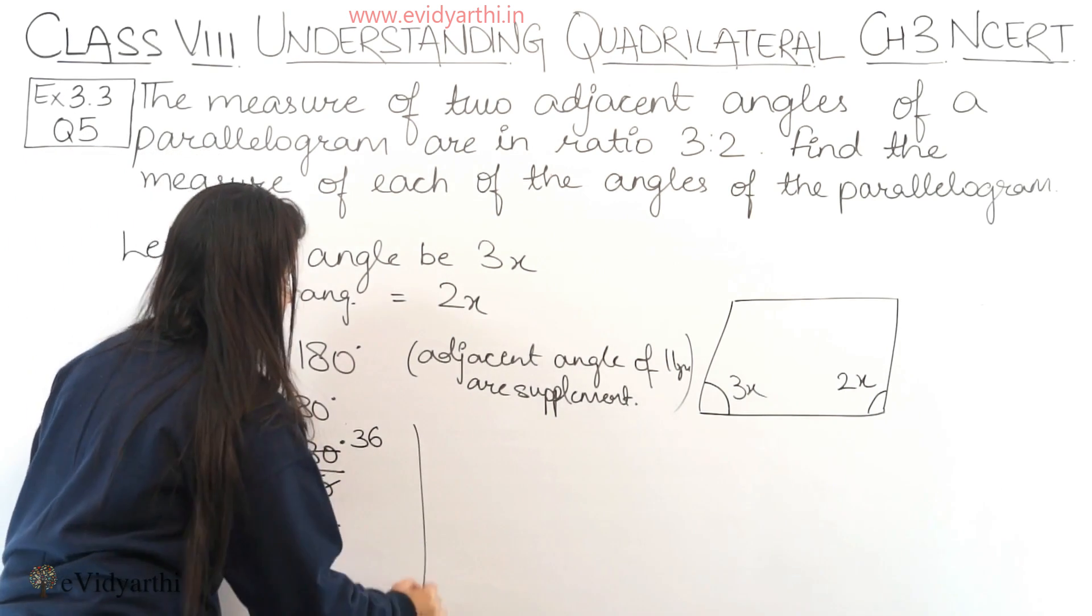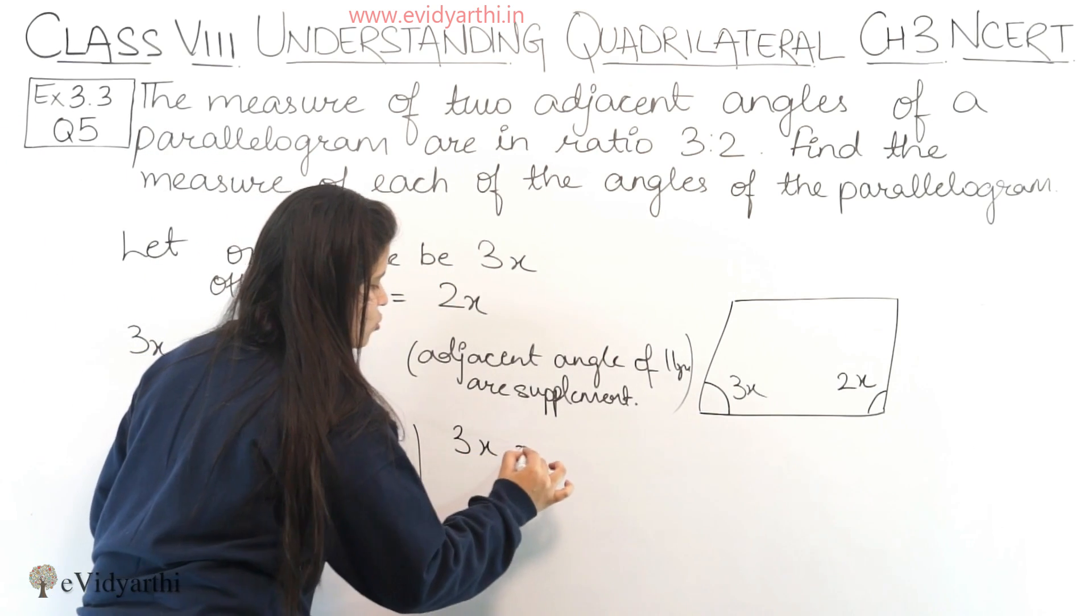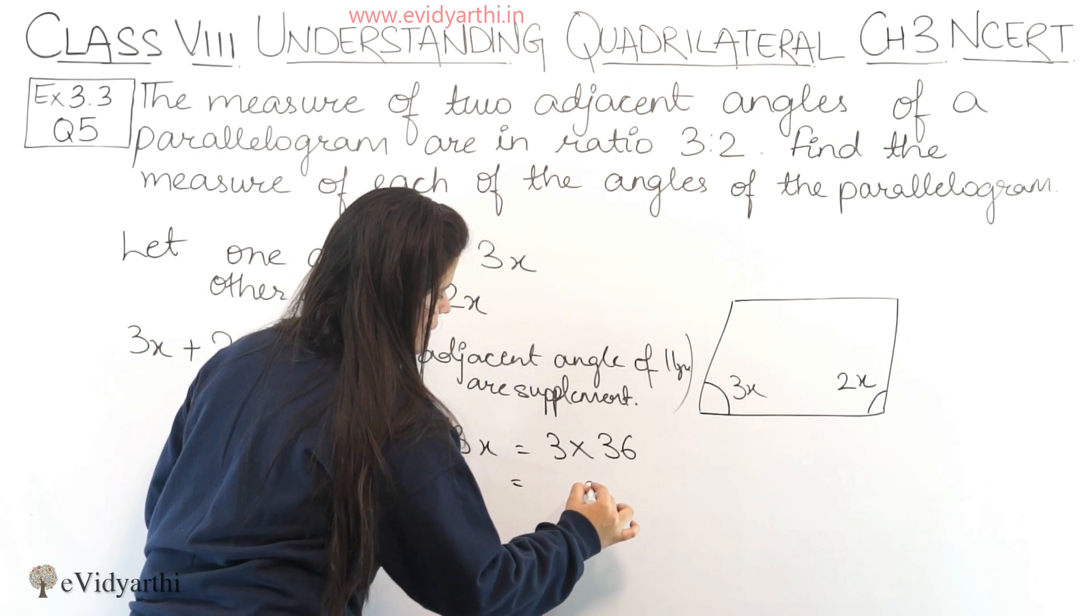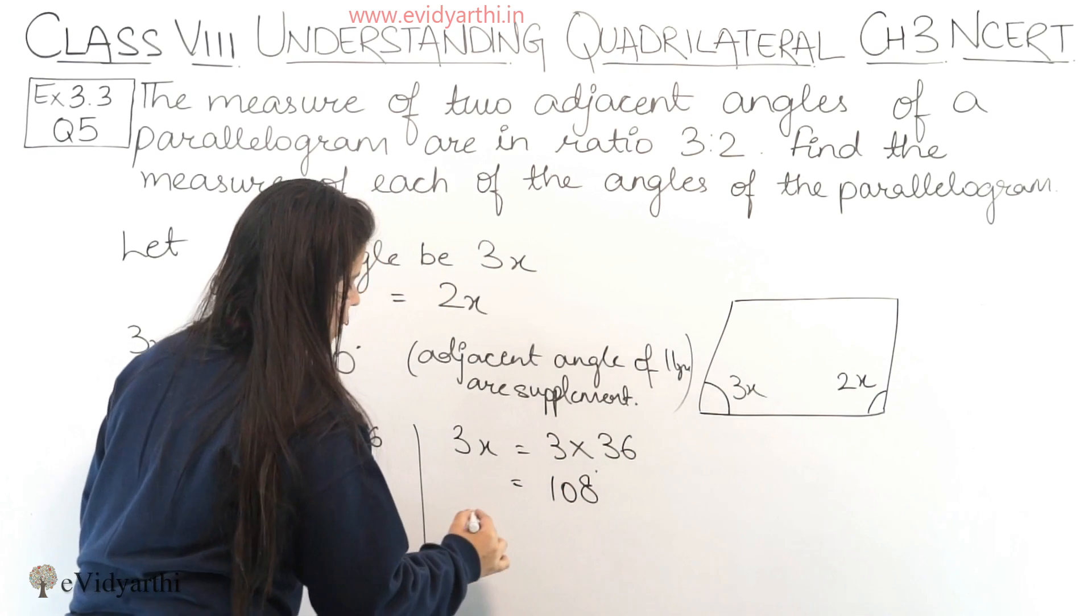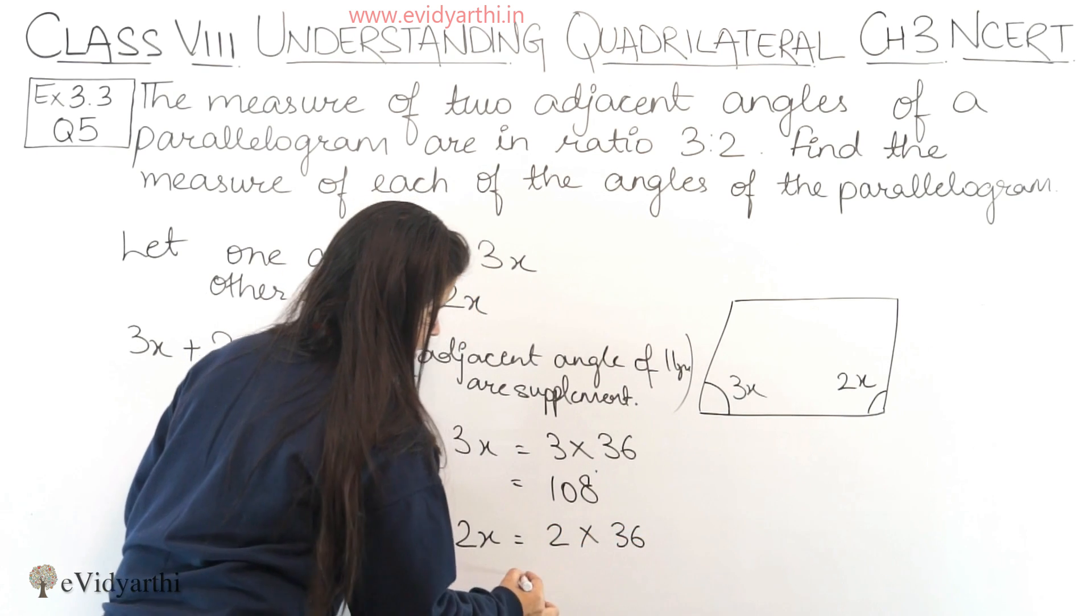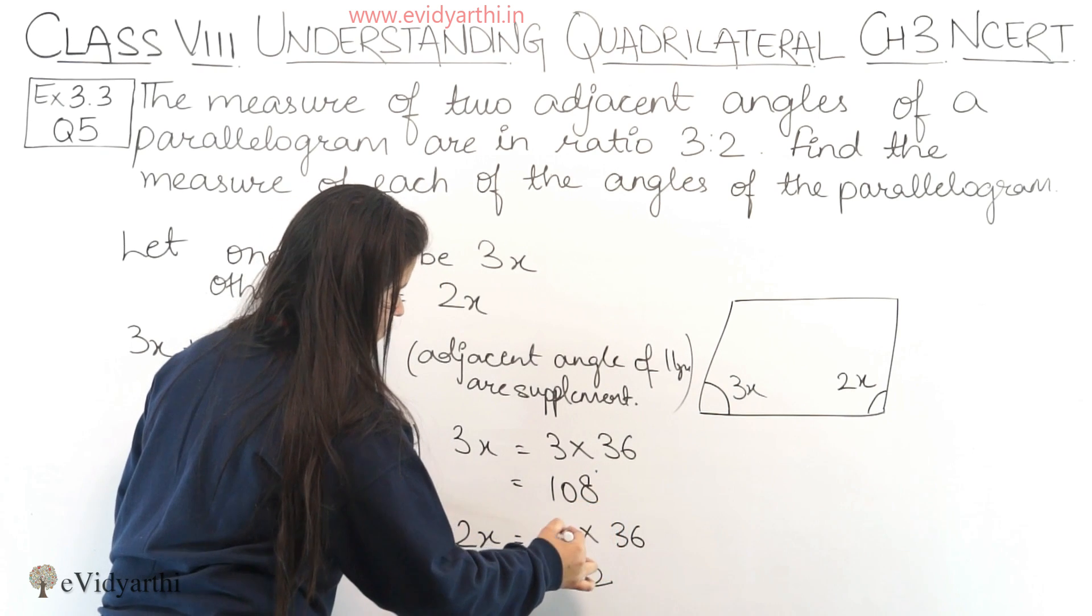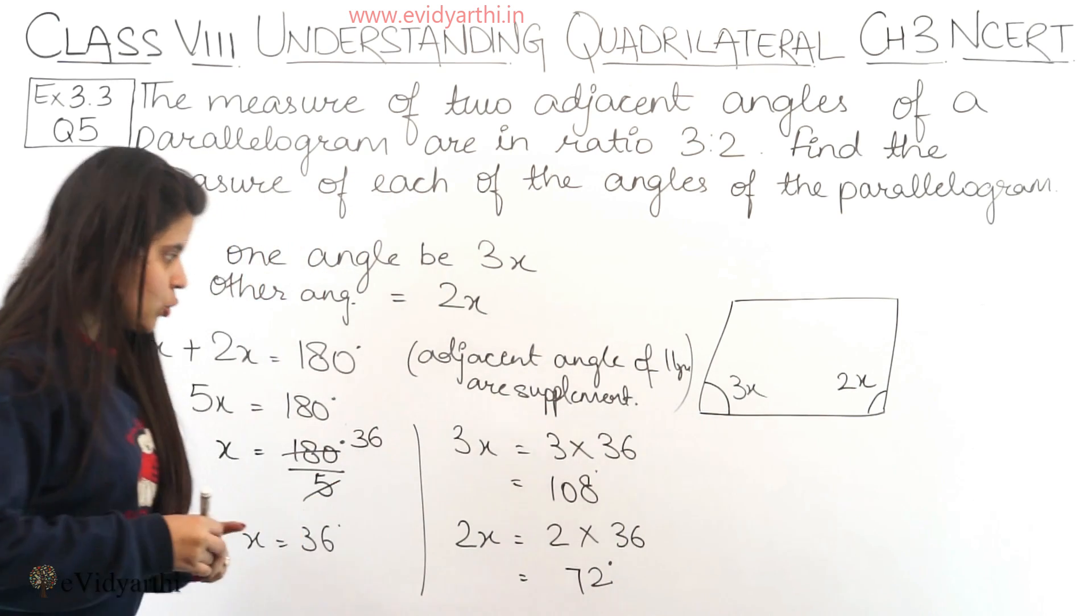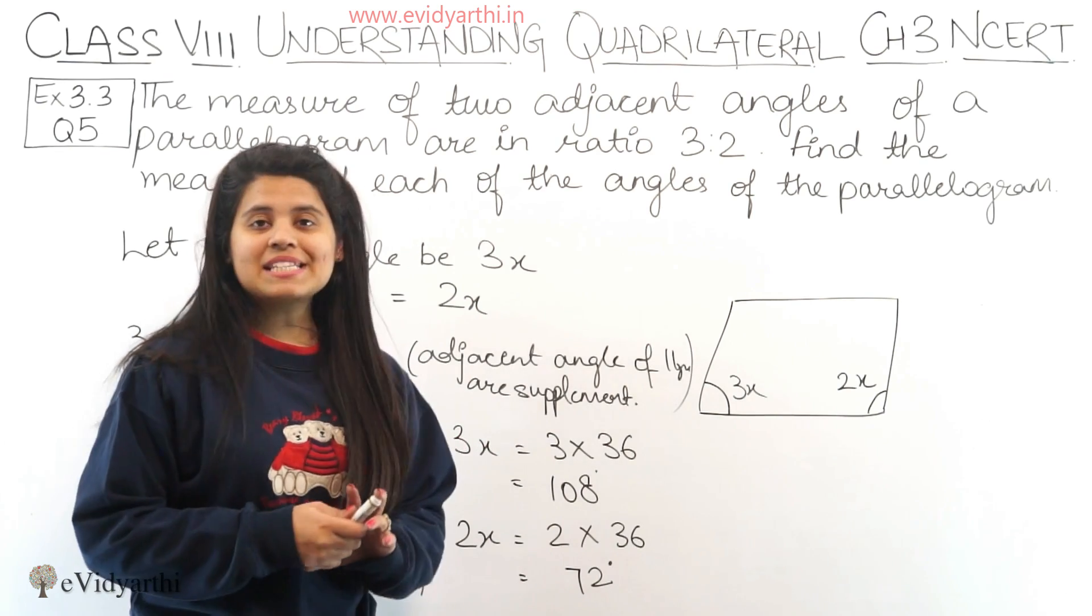Now we have the value of x. We need to find 3x and 2x. So 3x will be 3 into 36: 3 into 6 is 18 and 3 into 3 is 9 plus 1 is 10. This is 108 degrees. And 2x will be 2 into 36: 2 into 6 is 12, 2 into 3 is 6 plus 1 is 7. So 2x is 72 degrees. One angle is 108 degrees and one angle is 72 degrees.